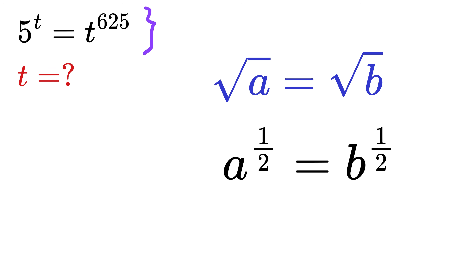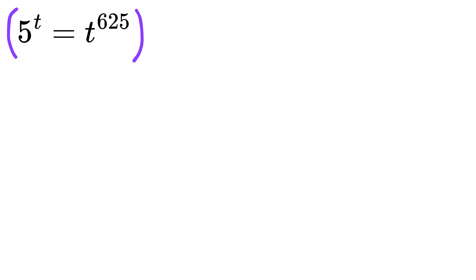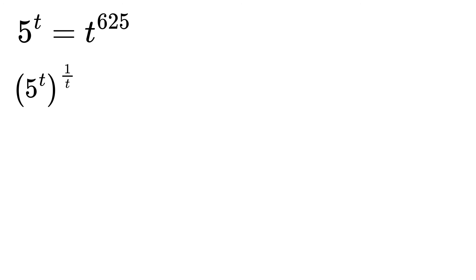Here, this is what we will do: we will raise both sides to the power 1 over t. So we take the left side, which is 5 raised to t, and raise it to 1 over t. Similarly, we take the right side, which is t raised to 625, and raise it to 1 over t as well.